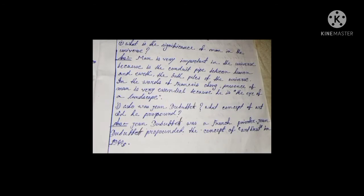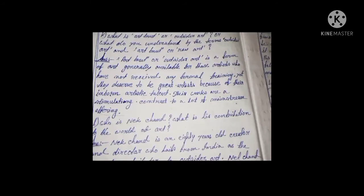Who was Jean Dubuffet and what concept of art did he propound? Jean Dubuffet was a French painter who propounded the concept of art brut in the 1940s. Art brut, or outsider art, is a form of art generally available for those artists who have not received any formal training, yet they deserve to be great artists because of their inborn artistic talent. Their works are stimulating in contrast to a lot of mainstream offerings.